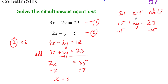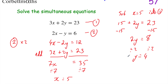15 take away 15 is 0, so we've got 2y on the left-hand side. And 23 take away 15 is 8, so 2y = 8. We don't want 2y — we just want y — so let's divide both sides by 2. And we get y = 4. So x = 5 and y = 4, and that's our answer.